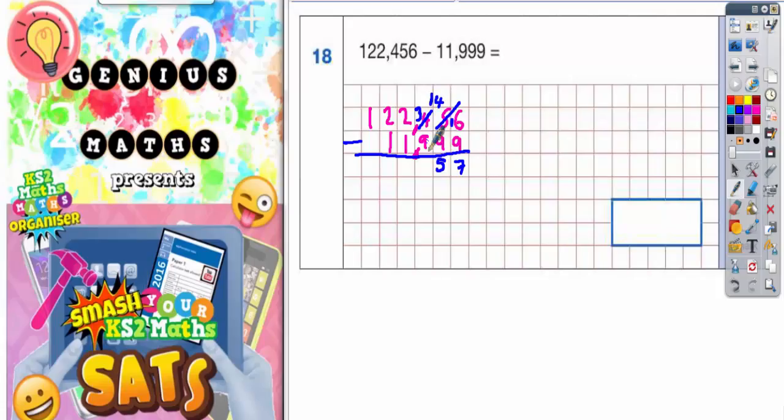3 takeaway 9 we can't do so we've got to borrow from the 2 so that becomes a 1. And the one we borrowed makes this 3 that's left into 13. Now we can carry on with this column. 13 takeaway 9 is 4. 1 takeaway 1 is nothing. 2 takeaway 1 is 1. And 1 takeaway nothing is 1. So it looks like the final answer is 110,457.